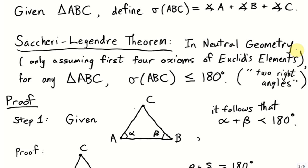In particular, one thing they were able to prove in neutral geometry was that the sum of the angles of a triangle is less than or equal to 180 degrees. Proving that the angle sum equals exactly 180 degrees requires the use of the parallel postulate.